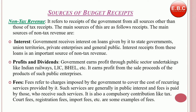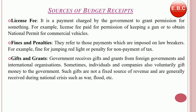Another source is fees. It refers to charges imposed by the government to cover the cost of recurring services provided by it, like court fees, registration fees, import fees, etc. The fourth one is license fees — it is a payment charged by the government to grant permission for something. For example, license fees paid for permission to keep a gun or to obtain a national permit for commercial vehicles. Next, we have fines and penalties, which are payments imposed for breaking the law, for example, a fine for jumping a red light or a penalty for non-payment of taxes.